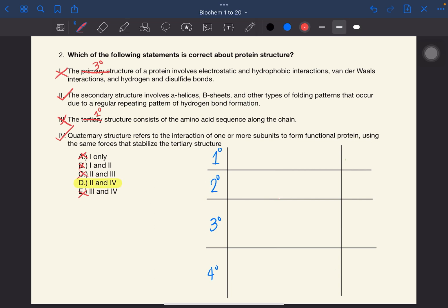To summarize, primary structure refers to the amino acid sequence and is stabilized by peptide bonds. For secondary, recurring structural patterns and are stabilized by hydrogen bonding. For tertiary, this refers to the 3D conformation of a protein. And those mentioned here, electrostatic, hydrophobic, van der Waals, hydrogen disulfide bonds.